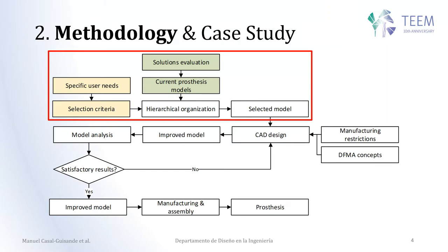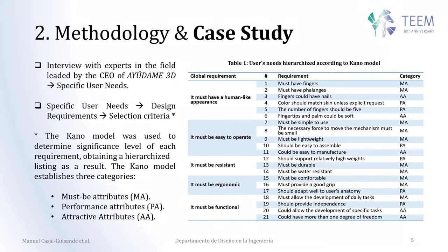The idea is to start by understanding what a group of users need, and with that, be able to establish some kind of selection criteria, to later, based on a study of the different models available online, select the best one — the one which best fits or is best adapted to the specific user needs. We have an example summarized in Table 1, which you can pause the video to check, where specific user needs were gathered from an interview with experts in the field, in this case from Ayuda M3D.